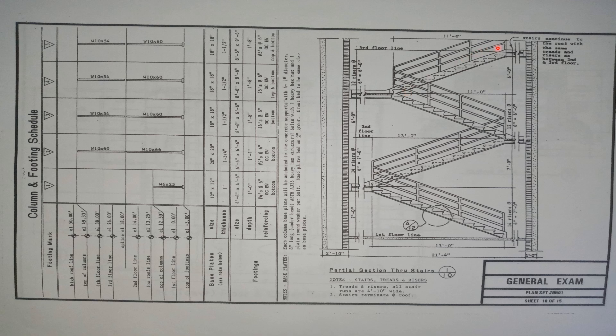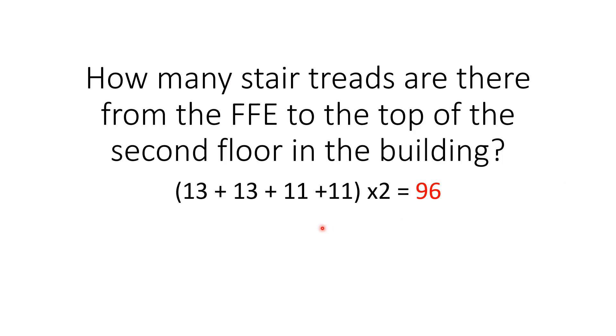13 and 13 is 26. And then 22, because this was 11 and 11, because that's a 12 there and that's a 12 there. So we have 26 and 22, 28, 48. And then there's two stairwells. So there's 96. 96 stairs all together.